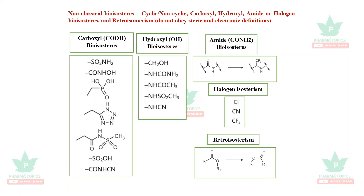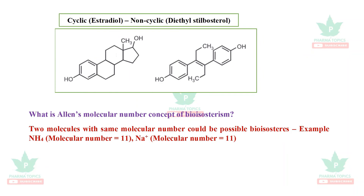Non-classical bioisosteres include carboxyl bioisosteres, hydroxyl bioisosteres, amide bioisosteres, halogen bioisosteres, and retroisosterism. Retroisosterism does not obey the electronic and steric definitions. Additionally, cyclic bioisosteres exist — for example, estradiol can be substituted with the non-cyclic diethylstilbestrol.